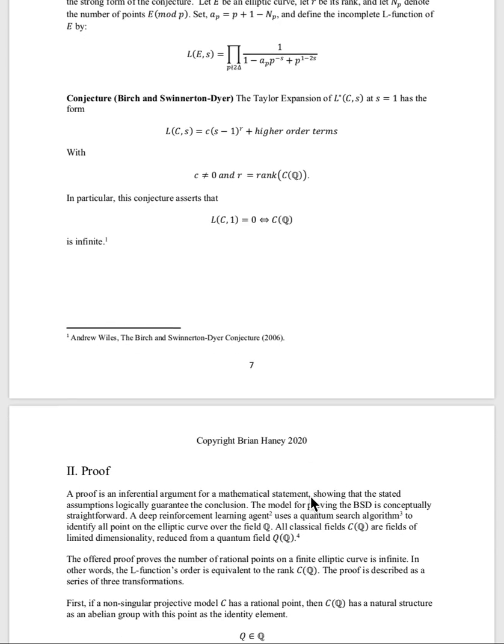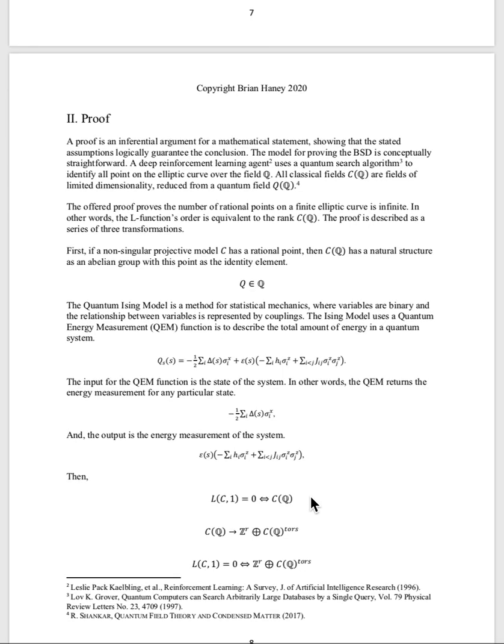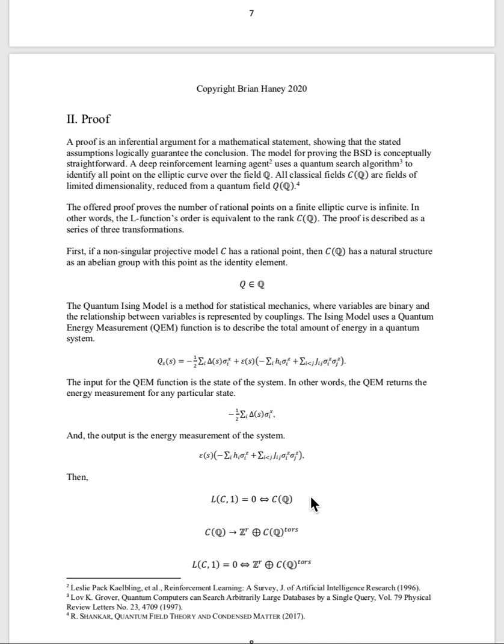Now we get into our proof. Our proof relies on the fact that fundamentally we are operating in a quantum field instead of a classical field. In a classical field, we might assume that the number of points on an elliptic curve are finite because the number of particles that exist in that physical state space are finite. But when we use a quantum system or a quantum description for our curve, we can recognize that the quantum field is what truly underlies the classical field. So we're making a move here from CQ to QQ.